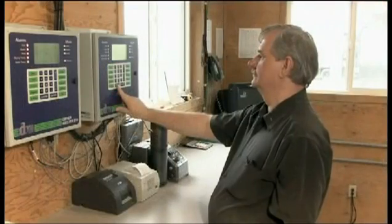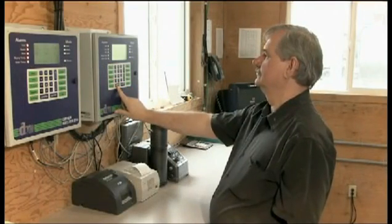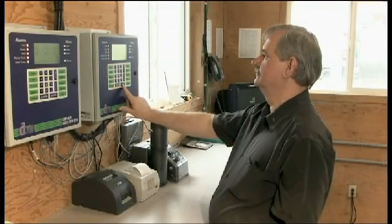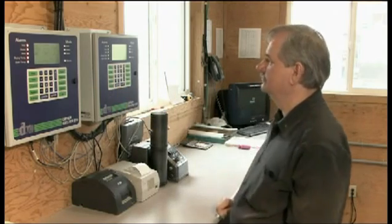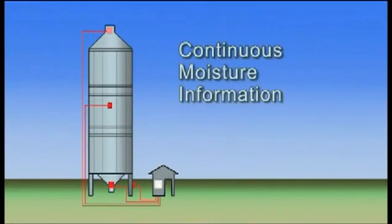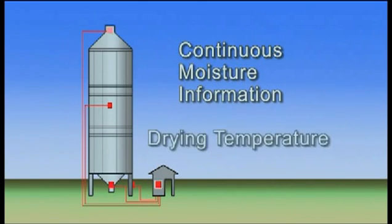The Dryer Master then has two important advantages. First, it continually monitors the dryer. Second, it has the benefit of continuous moisture information from both the inlet and the outlet of the dryer, as well as the drying temperature. This gives it a full picture of all the grain in the dryer, not only of what is coming out of the dryer.